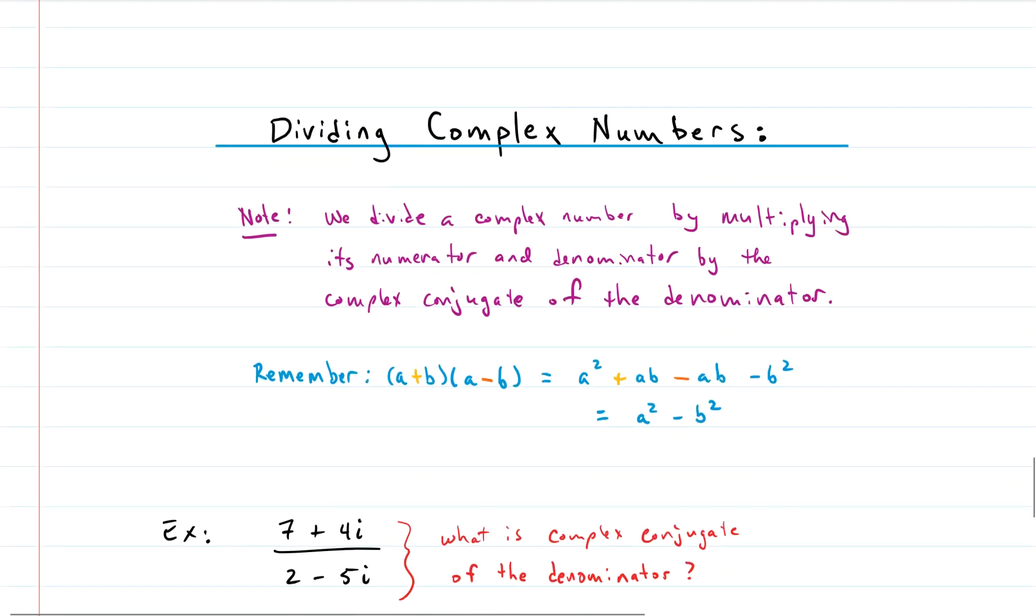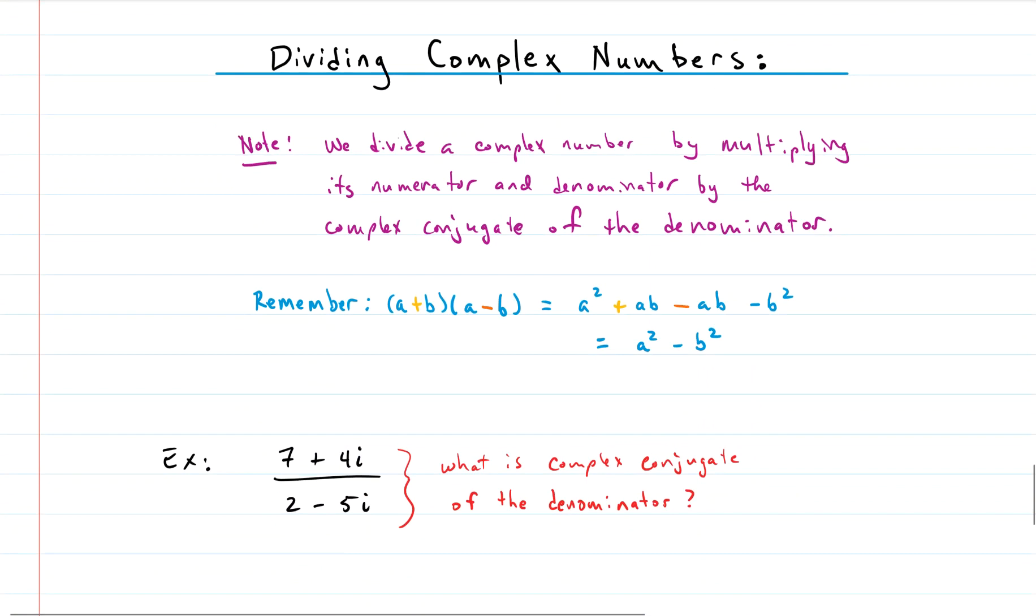All right. Here we go. Dividing complex numbers. So the way we divide a complex number, it's a little bit different than we divide normal things or real numbers. We divide a complex number by multiplying its numerator and its denominator by the complex conjugate of the denominator.